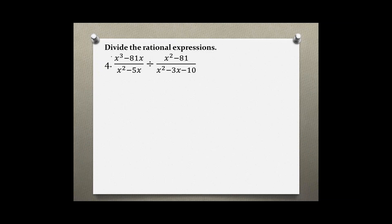Let's start by factoring this top part. I see they share a common factor of x, and when I take out one x, I am left with x squared minus 81. I can continue factoring because this is the difference of two perfect squares. So my GCF is x, and then factoring the difference of two squares: write two empty sets of parentheses, square root the first term — x and x — you need a plus and a minus, and the square root of 81 is 9. And we are done with the first part.